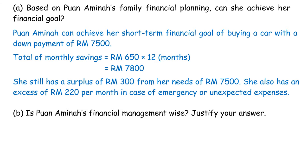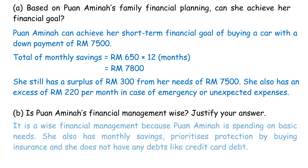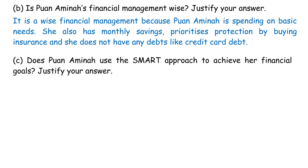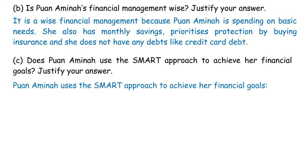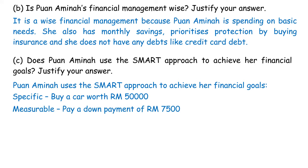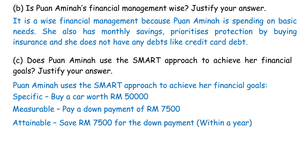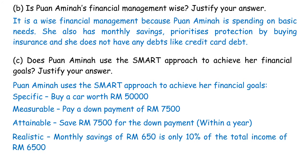Is Juan Amina's financial management wise? Yes — it is wise because Juan Amina spends on basic needs, has monthly savings, prioritizes protection by buying insurance, and does not have credit card debt. Does Juan Amina use the SMART approach? Yes: Specific — buy a car worth RM50,000; Measurable — pay a down payment of RM7,500; Attainable — save RM7,500 for the down payment within a year; Realistic — monthly savings of RM650 is only 10% of total income of RM6,500; Time-bound — within one year.